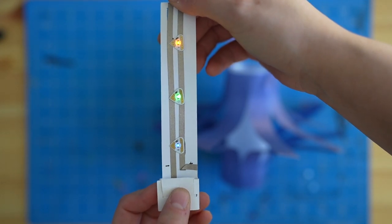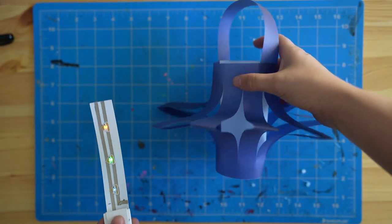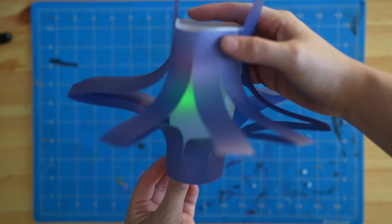So to make a paper circuit lantern I'll make a light strip and then the lantern body and then we'll put them together.